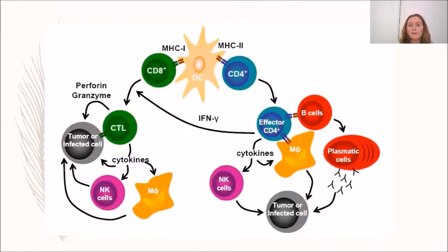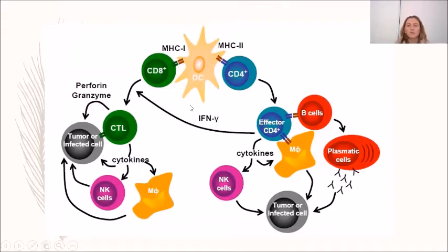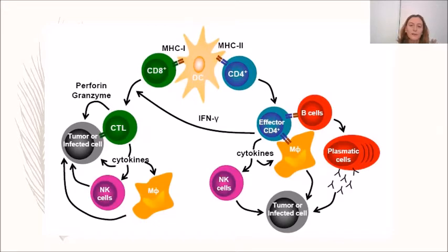This picture shows how the immune system acts to eliminate tumors. Dendritic cells present antigens to both CD8 and CD4 T cells. CD8 T cells differentiate into cytotoxic lymphocytes that kill tumor cells directly via perforin/granzyme, while CD4 T cells acquire a Th1 profile and secrete gamma interferon, which increases the cytotoxicity of CD8 and NK cells.